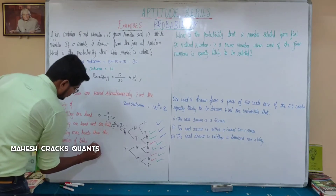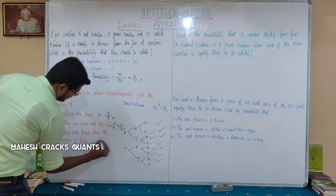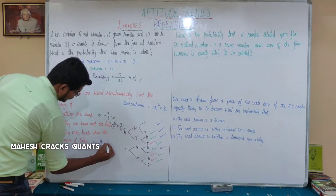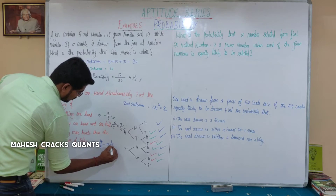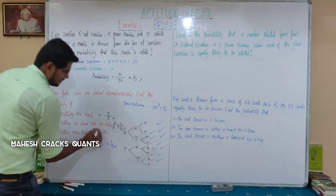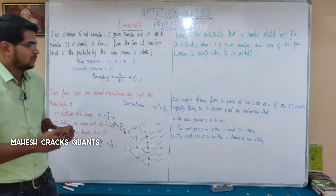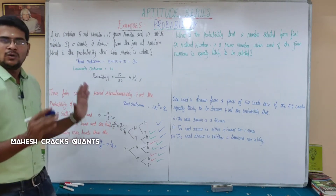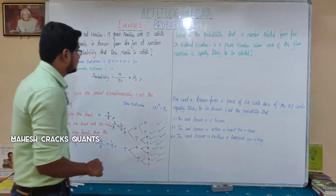So the probability of getting more heads than tails is 4 by 8, which simplifies to 1 by 2. That's all for this question.